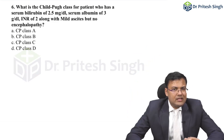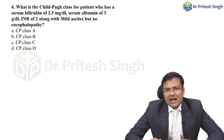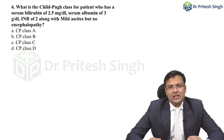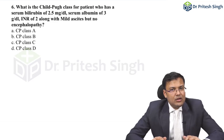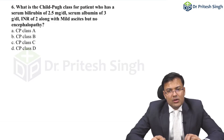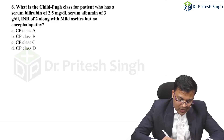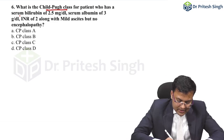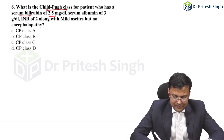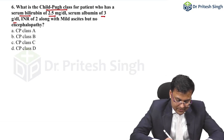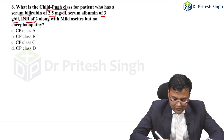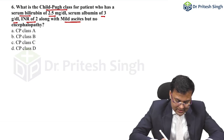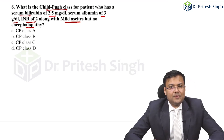A similar question was asked previously in AIIMS, and such questions were asked many times in various entrance exams. It is based on the CTP score — the Child-Turcotte-Pugh score. The question asks: what is the Child-Pugh class for a patient who has serum bilirubin of 2.5, albumin of 3 grams per deciliter, INR of 2, with mild ascites and no encephalopathy?